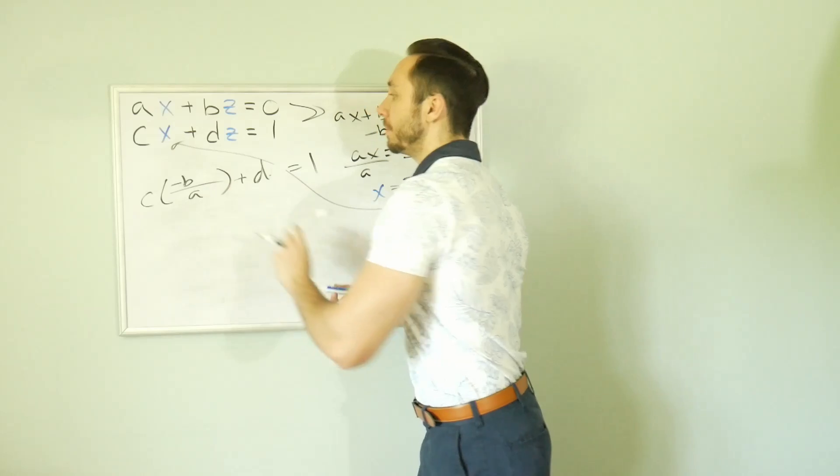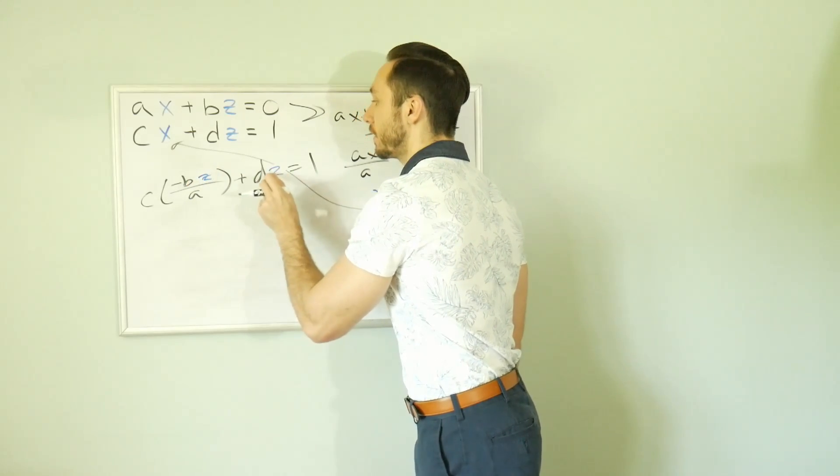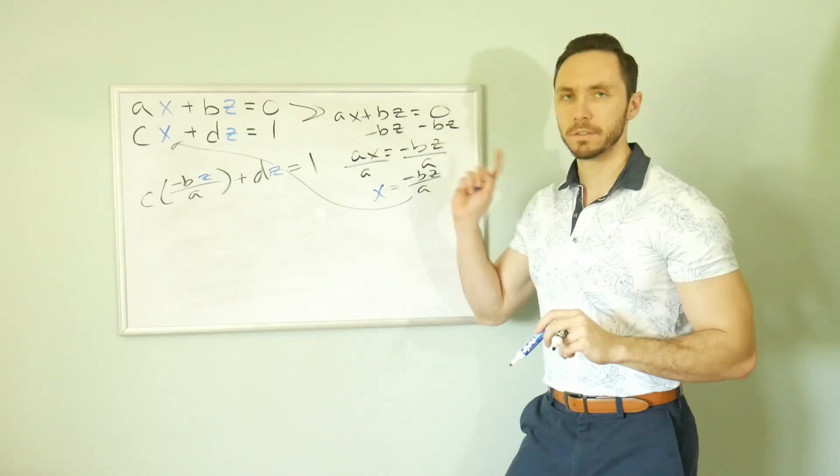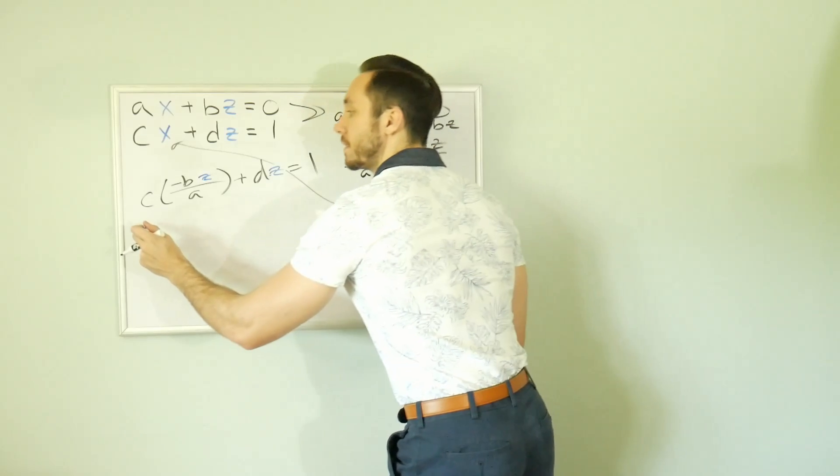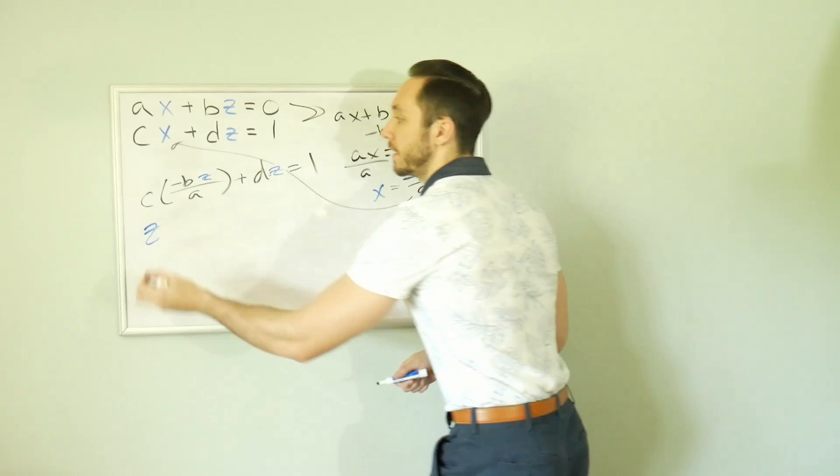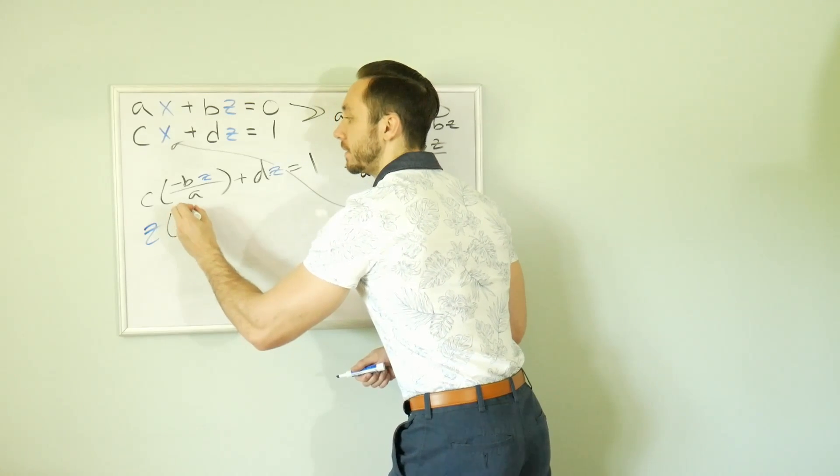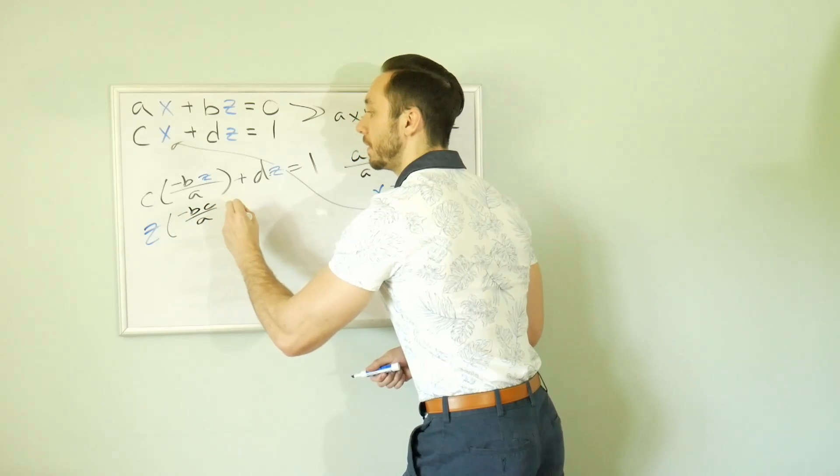The only variable left in this equation that is from the inverse is Z in blue. So let's solve for Z. I'm going to first start by factoring it out. So I'm going to get Z times, we'll say negative BC over A plus D. That is equal to one.